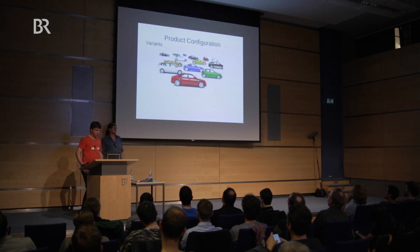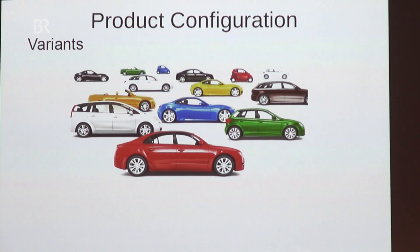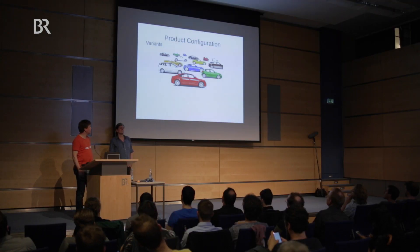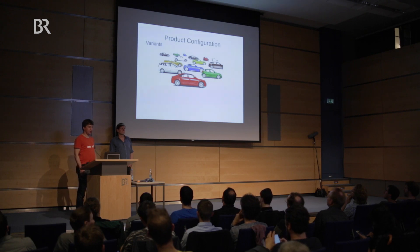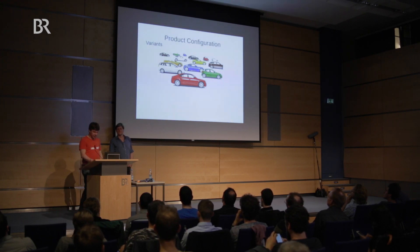So what is product configuration? You all know some car manufacturers. They have websites where you can select your favorite car. A car manufacturer offers a huge variety of cars. These cars can be described with parameters, and each parameter has a domain. For example, the type of fuel the car needs, or the type of gearbox the car has, the type of steering wheel, or the color of the car. When configuring the car you want to buy, you select various values for all these parameters.